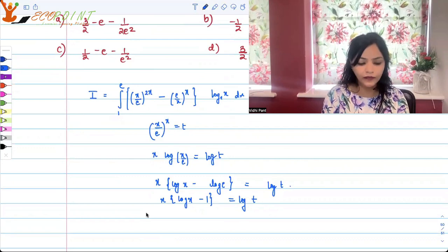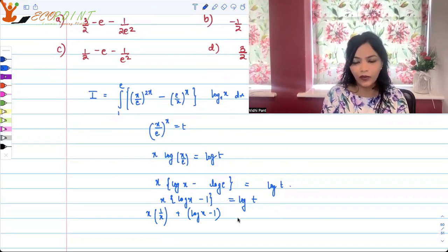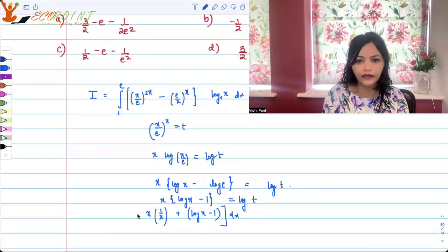You will have to use product rule here. X as it is, 1 by x plus log x minus 1 multiplied by 1, derivative of x, dx, the entire thing dx, is equal to 1 upon t dt.